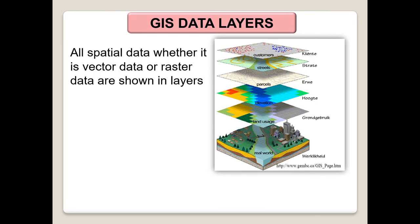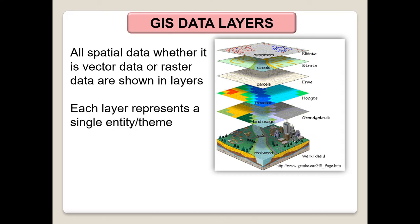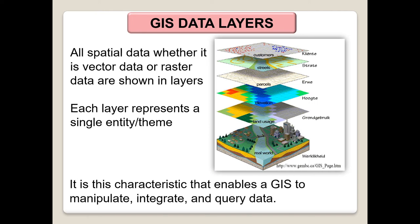GIS data layers: all spatial data, whether vector or raster, are shown in layers. Each layer represents a single entity or theme. These questions have been asked in various papers where candidates are asked to identify the data layer used to determine various problems.